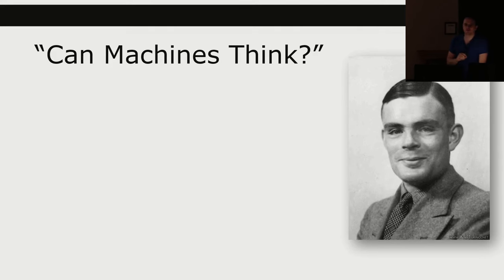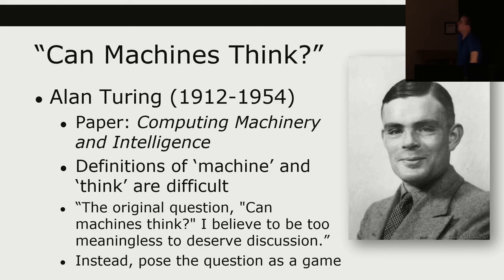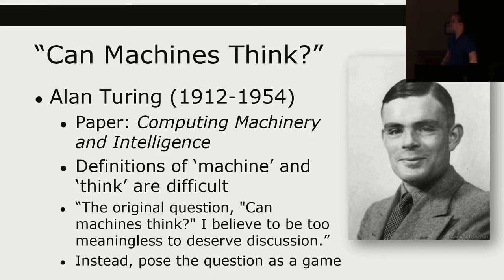This is Alan Turing — basically the grandfather of computer science. If you haven't seen the movie The Imitation Game, it does a decent job covering his life. One of the most tragic stories in modern history: this man basically invented computing, designed one of the first operational computers, and developed a machine that helped break German codes in World War II, saving millions of lives. But he was gay, and the British government imprisoned and chemically castrated him for it. He eventually killed himself. Absolutely tragic.